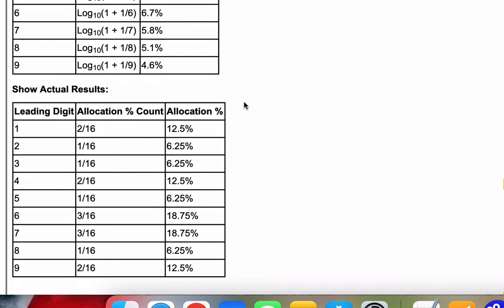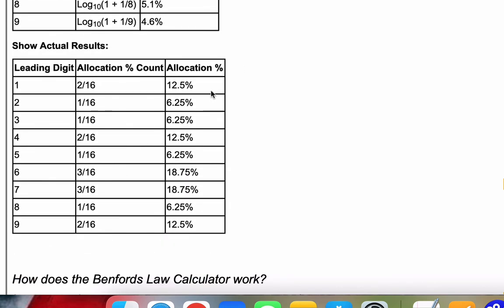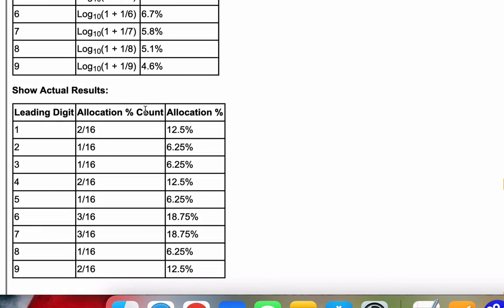Now we'll take the data that we entered and run the allocation percentage. In the data I entered, we had 2 numbers starting with 1, 1 starting with 2, 1 starting with 3, and then so on through 9.